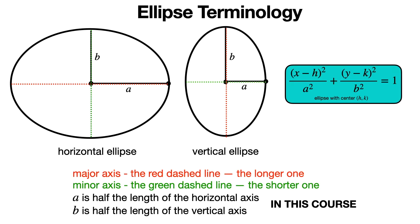So we're going to begin by discussing ellipse terminology. A horizontal ellipse is one where the horizontal dimension is bigger, and a vertical ellipse is one where the vertical dimension is bigger. The formula for an ellipse is (x - h)² / a² + (y - k)² / b² = 1, where a is half the length of the horizontal axis and b is half the length of the vertical axis.